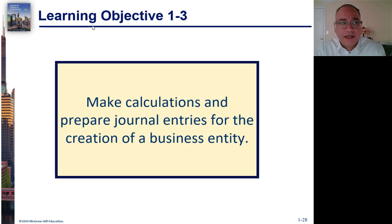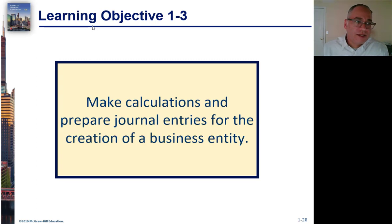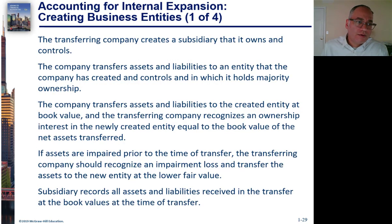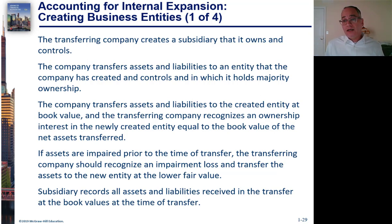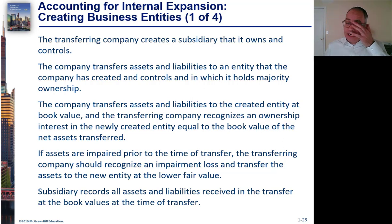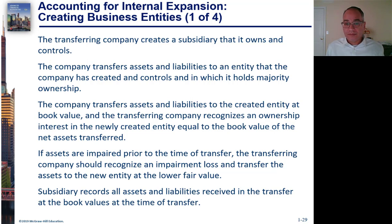Advanced accounting learning objective 1-3: make calculations and prepare journal entries for the creation of a business entity. We're going to walk through an example. The transferring company creates a subsidiary that it owns and controls by transferring assets and liabilities to the subsidiary. Everything transfers at book value because the parent controls the subsidiary completely — it's really just like moving money from one pocket to the other.